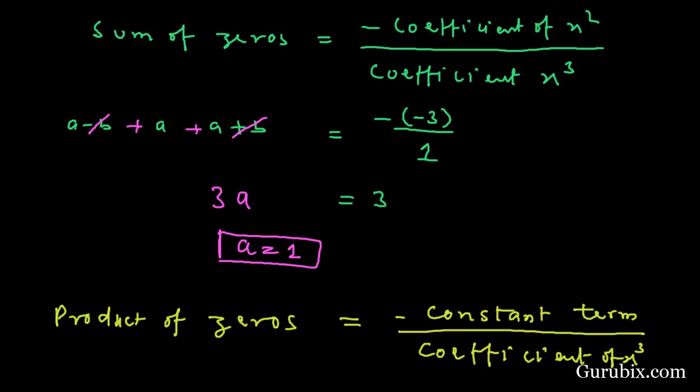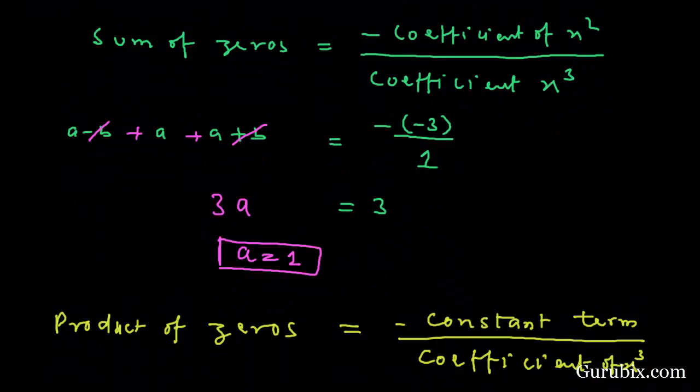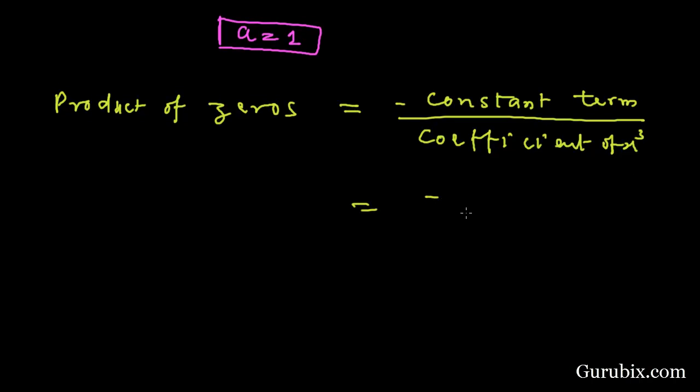The constant term is 1 and the coefficient of x³ is 1. The product of zeros will be (a - b) × a × (a + b). Now we know the value of a, therefore it will be (1 - b) × 1 × (1 + b). Finally, it will be 1² - b², and here is -1.